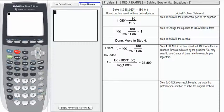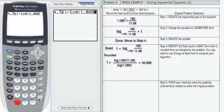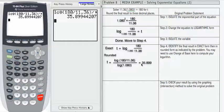I'm going to put that all in the calculator so you can see how it works. Log of 180 divided by 11.36, parentheses, divided by log 1.080. If we do that and press enter, we should get 35.899 rounded to three decimals.